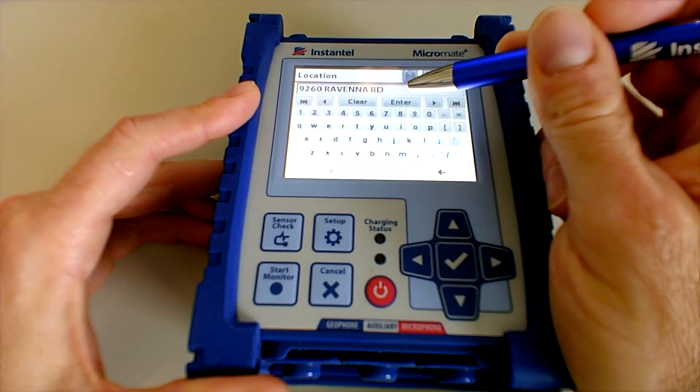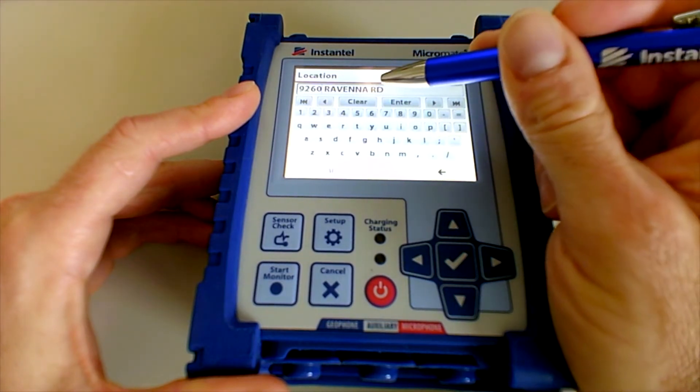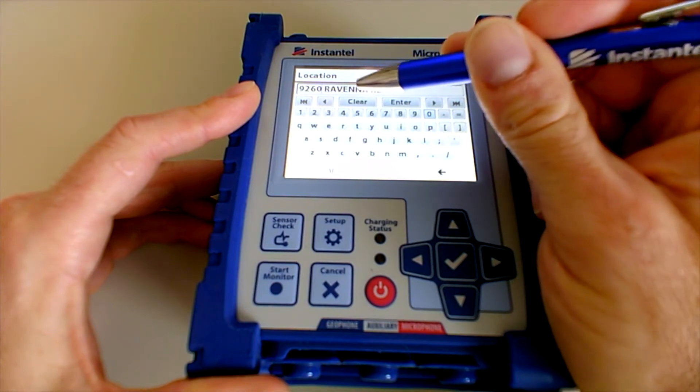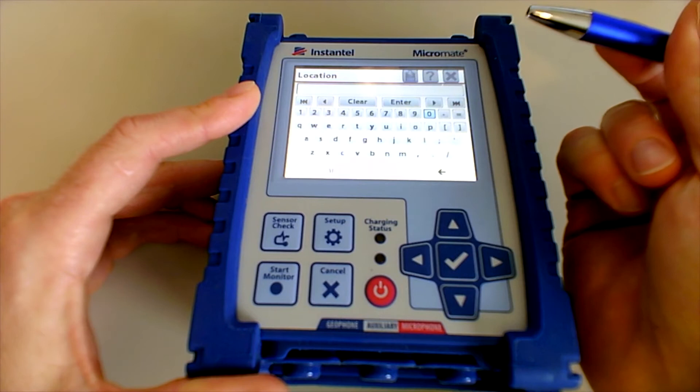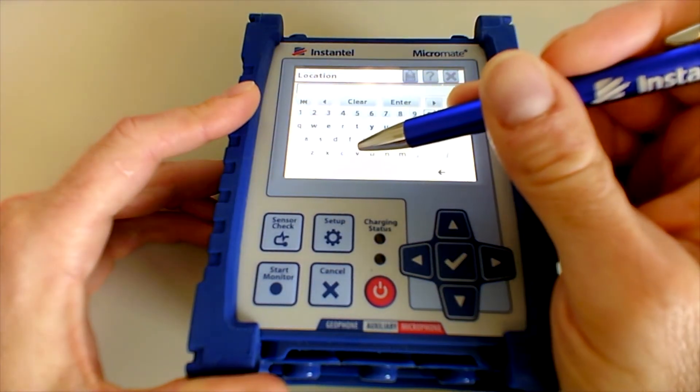Now, if you want to change your entire note, instead of just backspacing all the way through it, you can use the clear button. Clear takes everything away, and then you can reenter whatever you want the location to be.